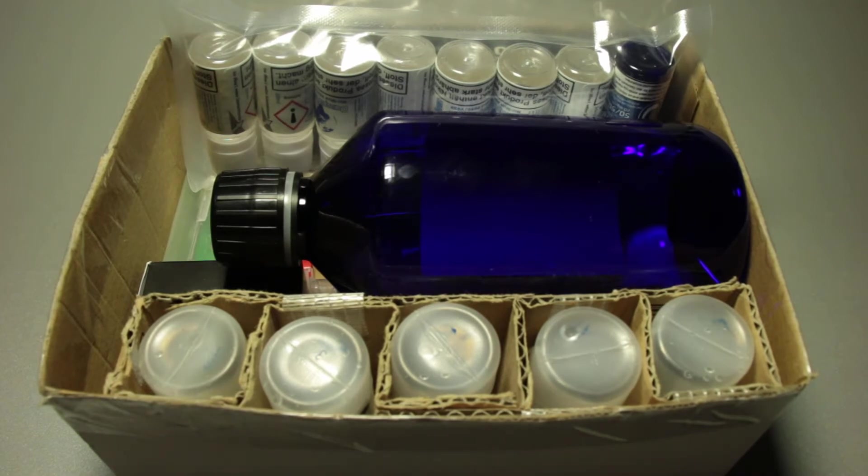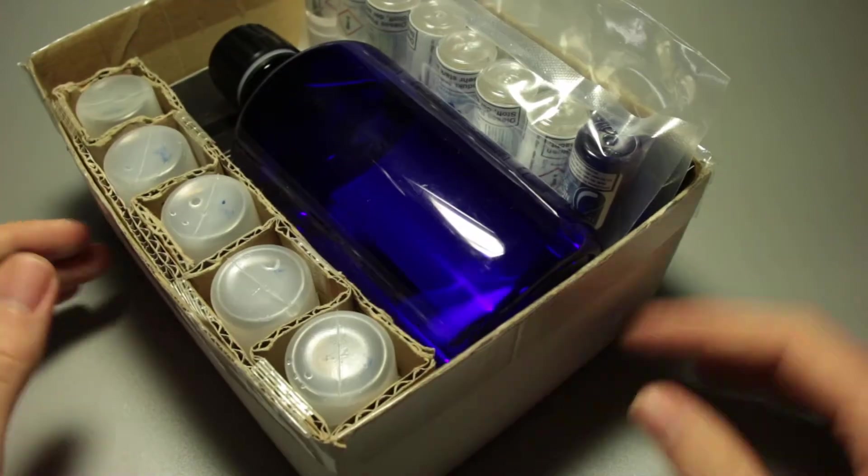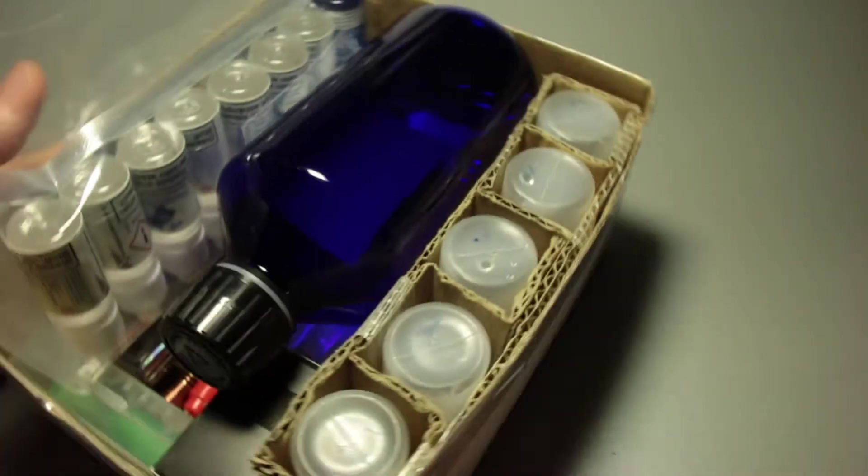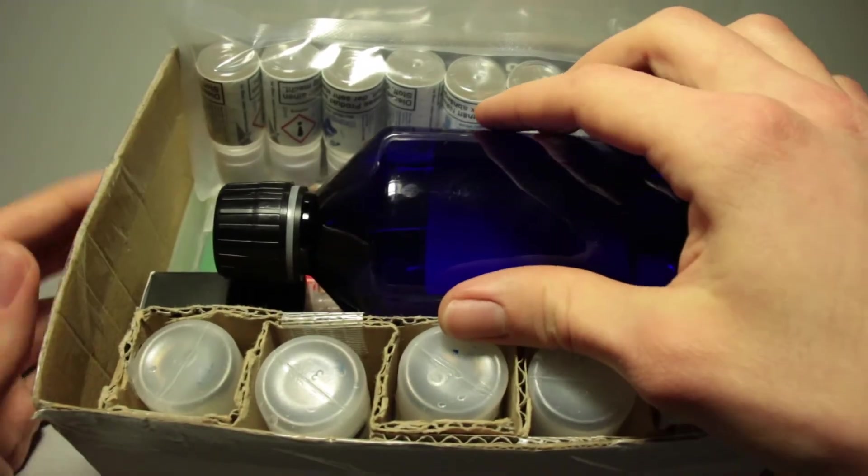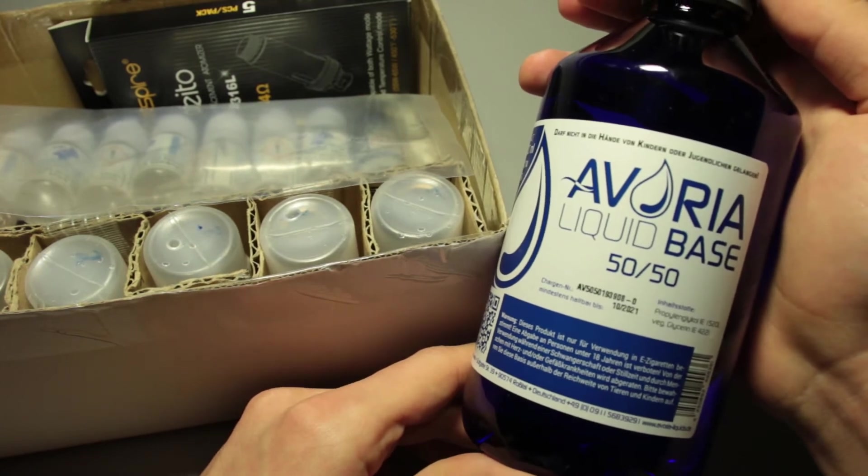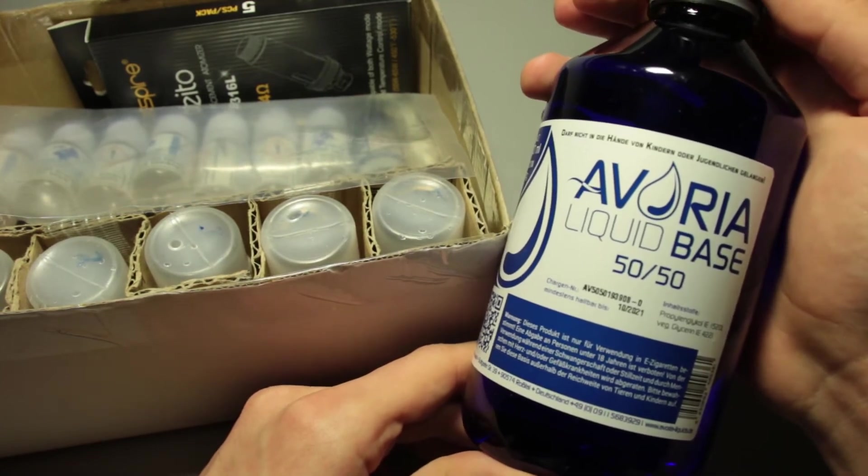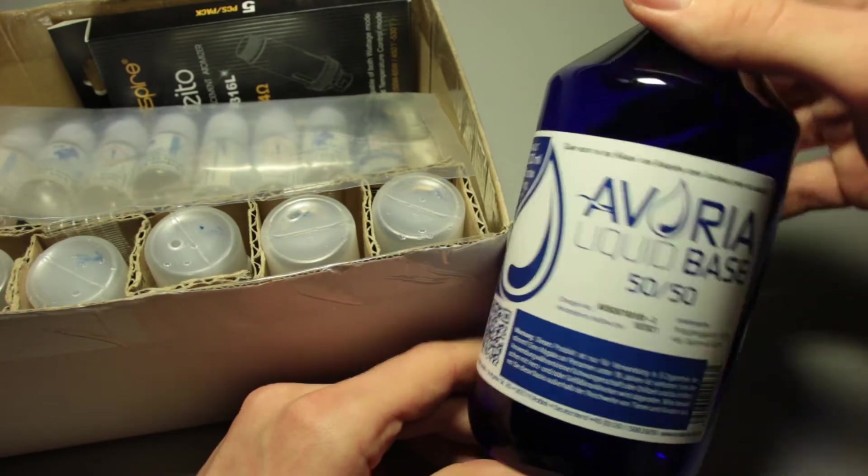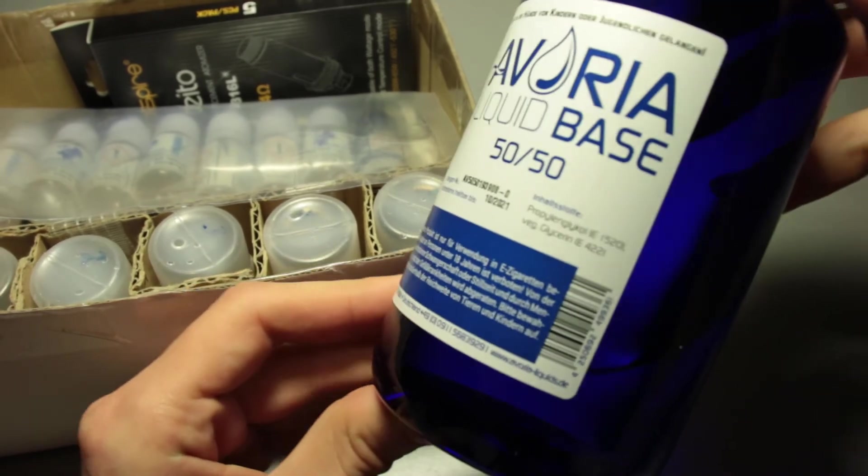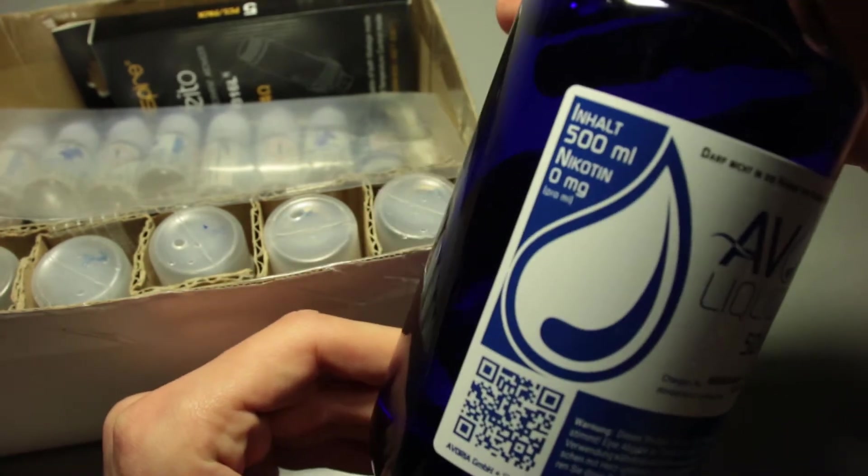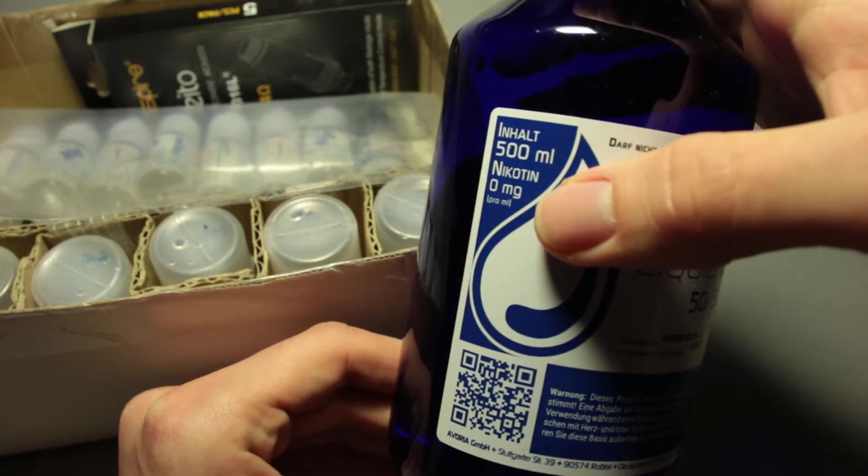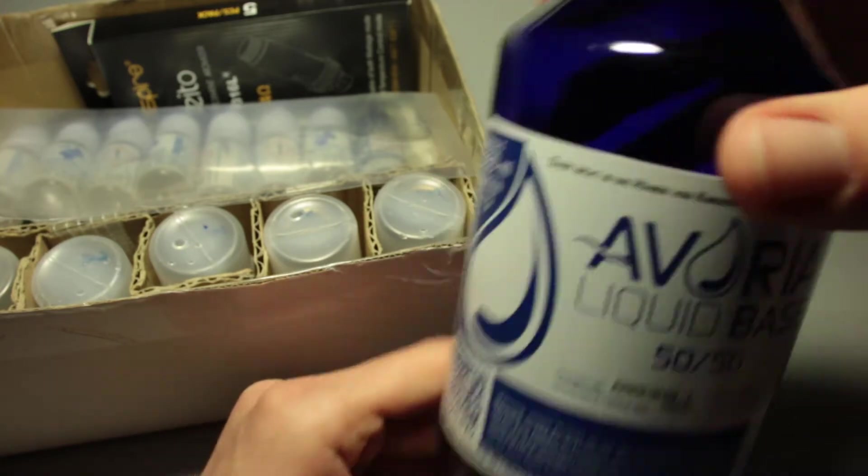In any case, let's start. So I've got my little e-juice mixing case right here in my little box. First off, I've got the base liquid 50/50, propylene glycol and vegetable glycerin. I think this is 500 milliliters, yes, zero milligrams of nicotine.